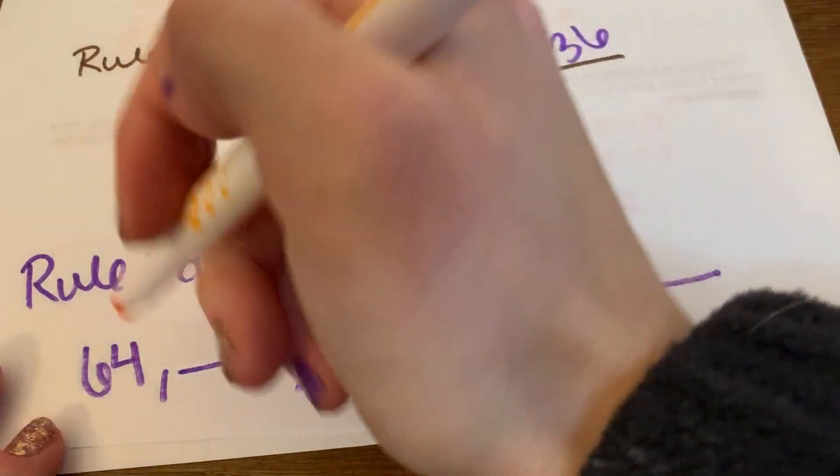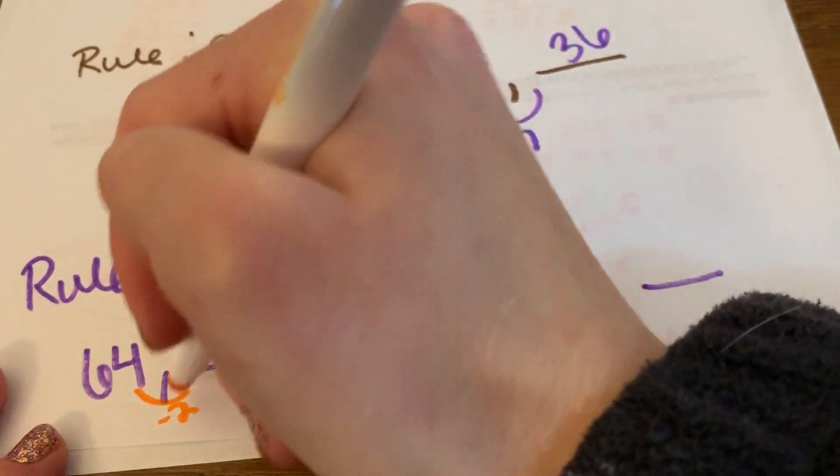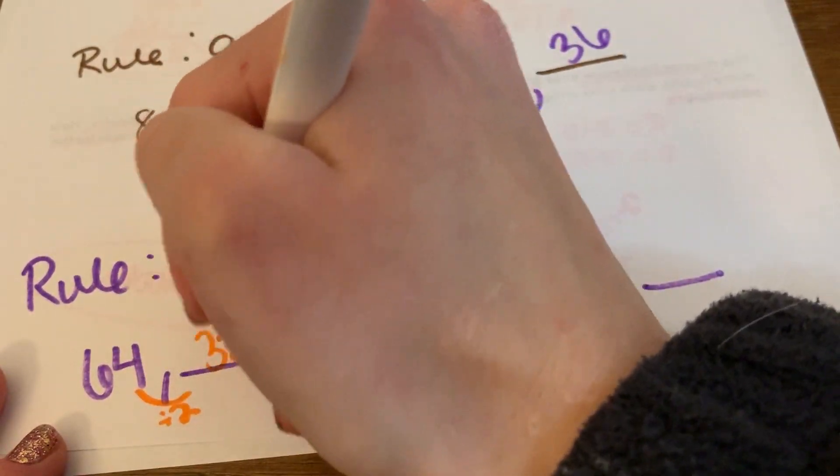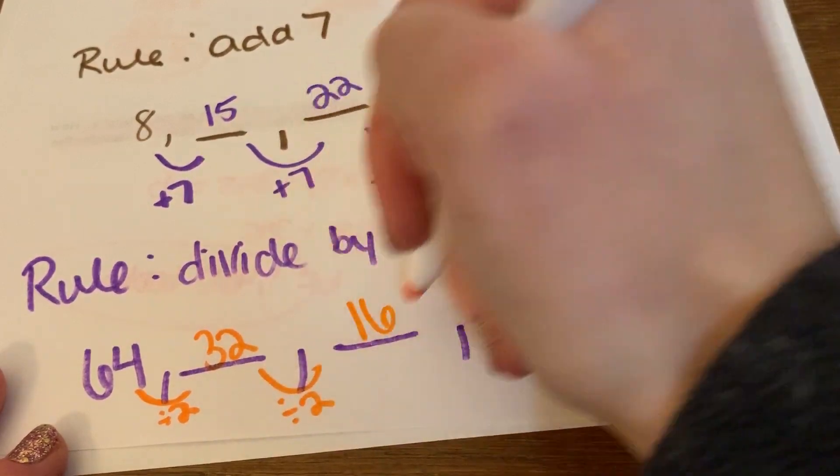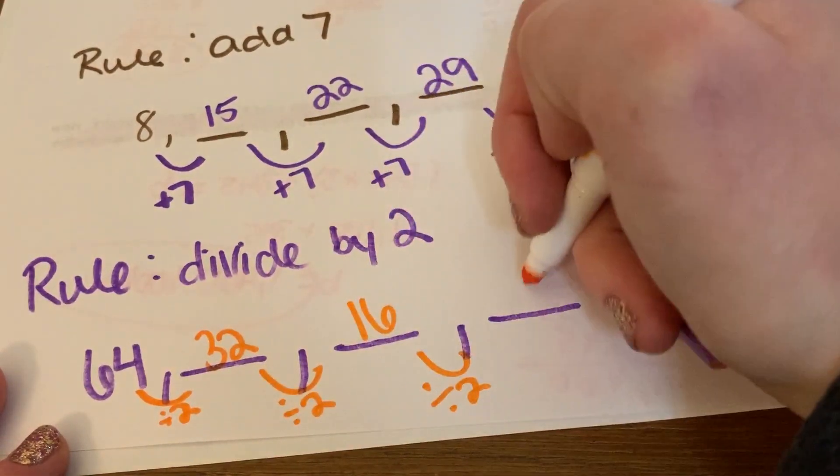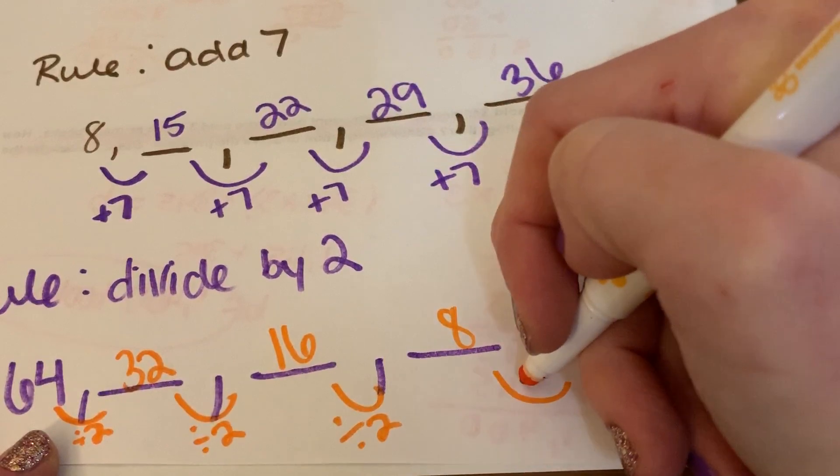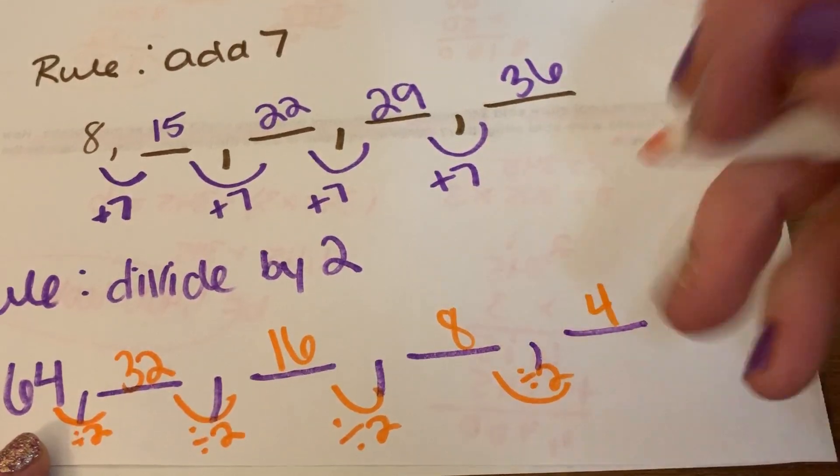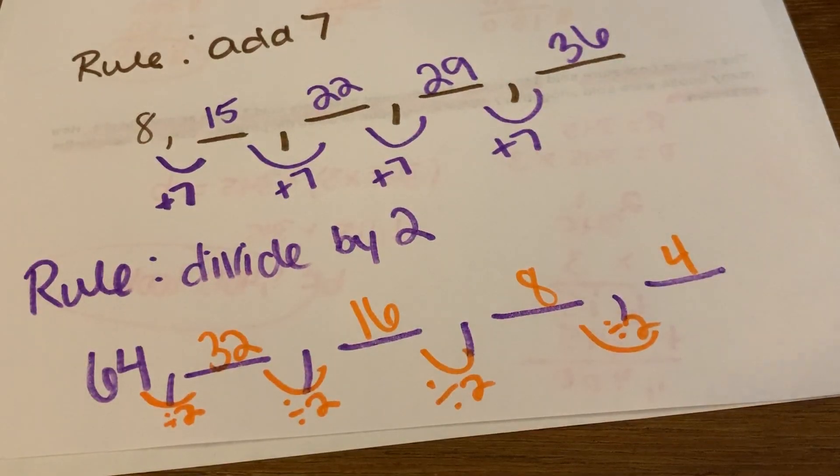All right, 64 divided by 2, that's going to give us 32, divided by 2, 16, divided by 2, 8, divided by 2, 4. So I just went ahead and I kept taking it on.